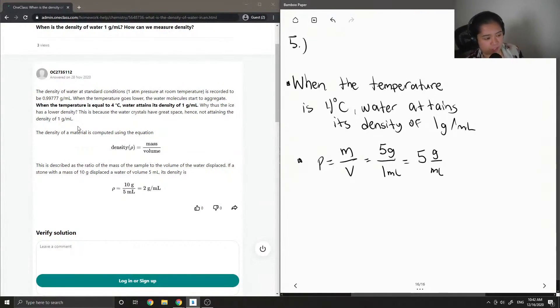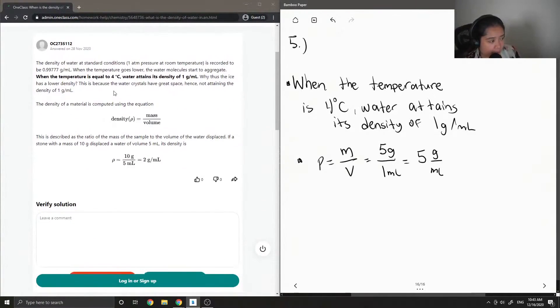So it's pretty much also just one, but when the temperature goes lower, the molecules start to aggregate. When the temperature is equal to four degrees Celsius, water attains its density of one gram per milliliter. Why does ice have a lower density?